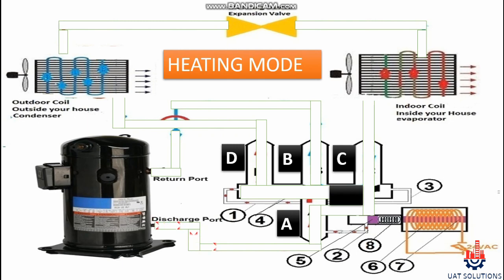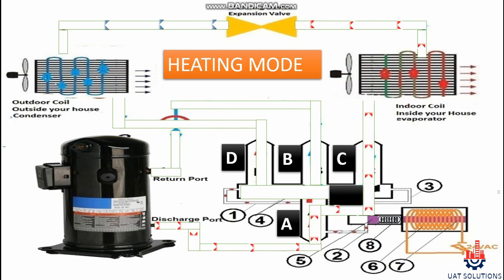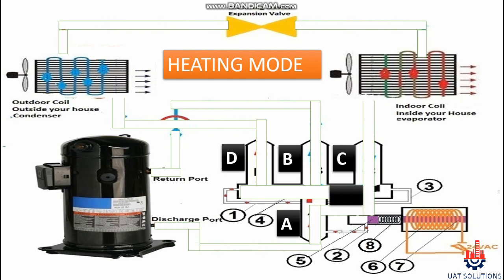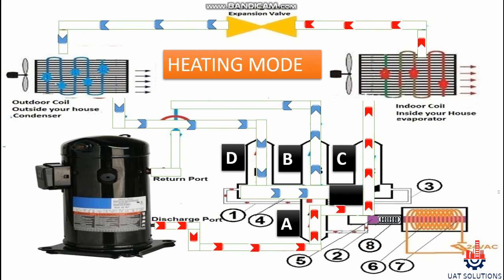When the heat pump is in heating mode, the evaporator and condenser roles interchange. The compressor discharges refrigerant into port A of the four-way valve, and via port C the refrigerant enters the evaporator coil. After heating the space, it passes through the metering device and goes to the condenser. From there, refrigerant enters port D of the four-way valve and passes through port B to enter the compressor suction line.